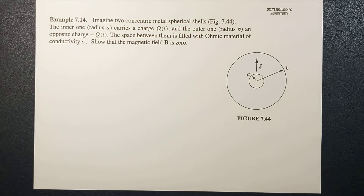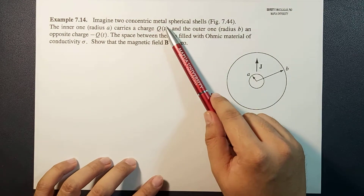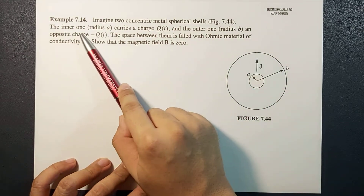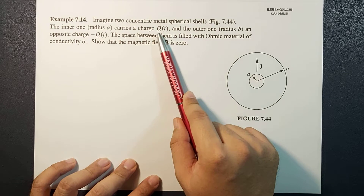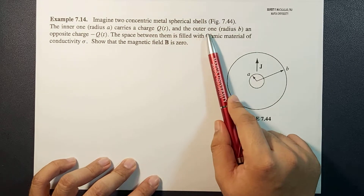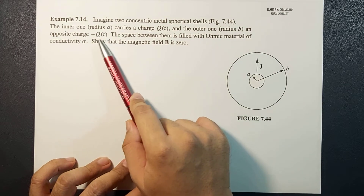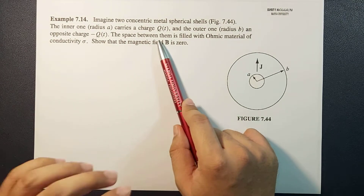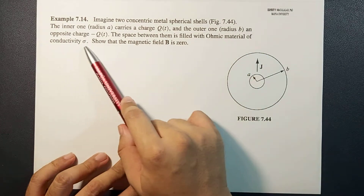The example reads: imagine two concentric metallic spherical shells as shown in the figure. The inner one has radius A, carries charge Q, which is a function of time. And the outer one, radius B, carries opposite charge, negative Q as a function of time. The space between them is filled with ohmic material of conductivity sigma.